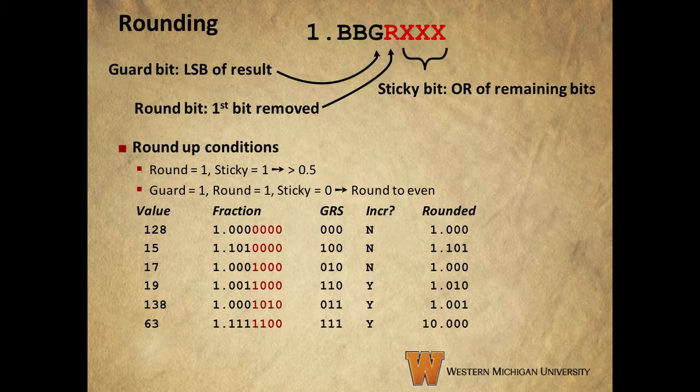For rounding, we take a look at a simple way to evaluate which way to round. We divide our fractional representation into groups of bits and focus on 3 bits. The guard bit is the least significant bit of the result — that's the one we're going to keep. The round bit is the first bit that gets removed through rounding, and the sticky bit is the OR of the remaining bits. Basically, the sticky bit indicates whether the remaining bits are all zeros or not: it's zero if all remaining bits are zero, and one otherwise. This goes back to our discussion of rounding in a previous video.